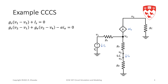KCL at node 2: the current leaving node 2 through gs is gs(v2 - v1). The current leaving node 2 through ge is ge(v2 - v4). The current leaving node 2 in the current source is minus alpha times ie. We can write that now because ie is one of our variables. KCL at node 3: we have the current in gc which is gc(v3), and the current in the current source which is alpha times ie.